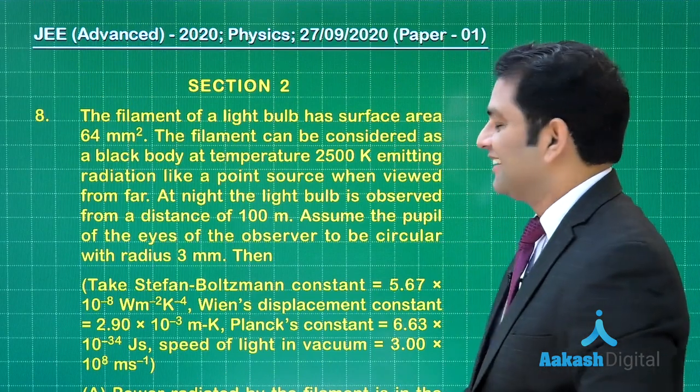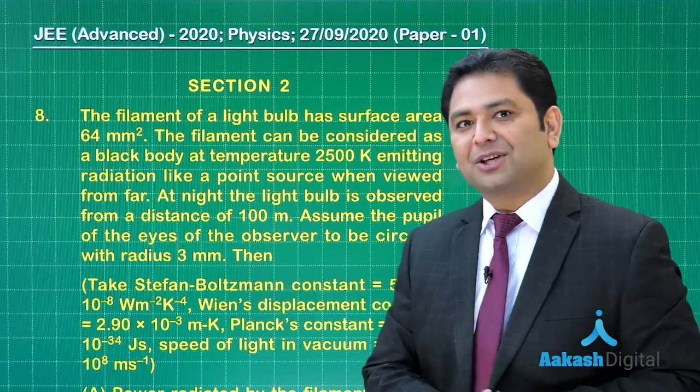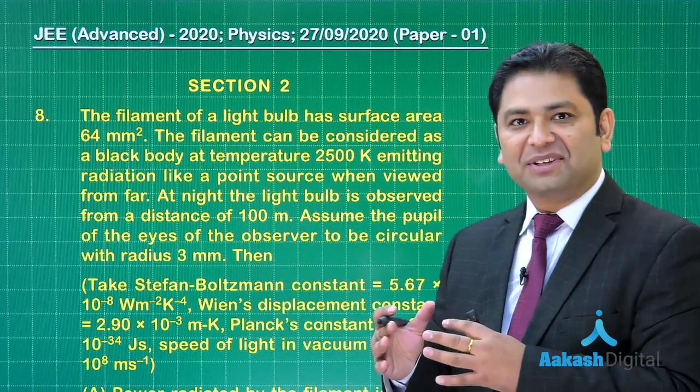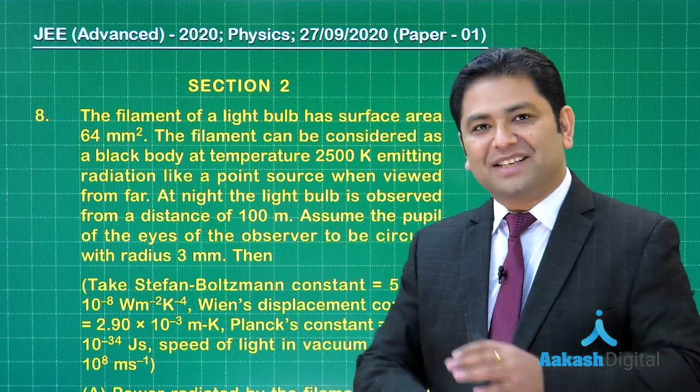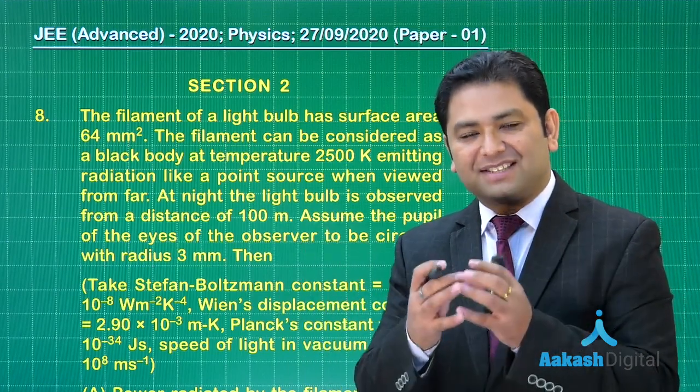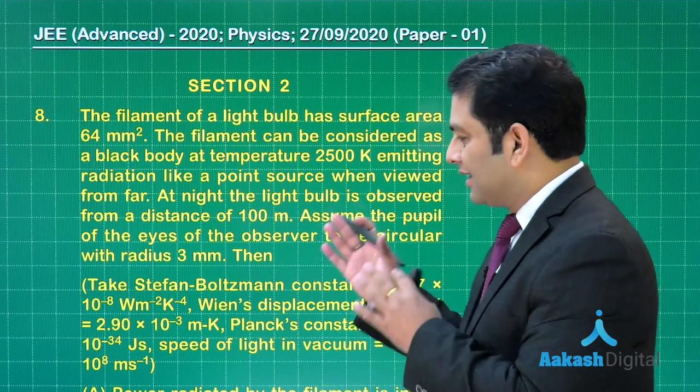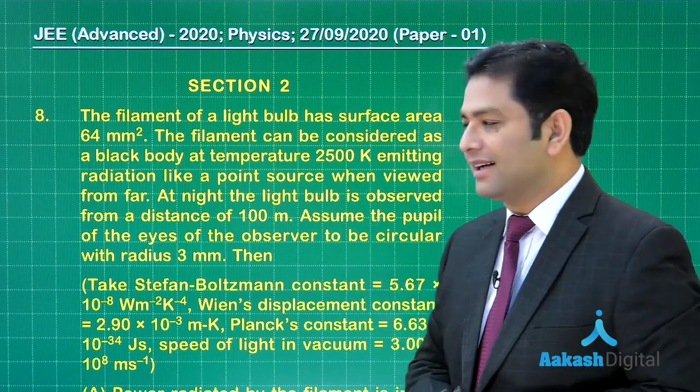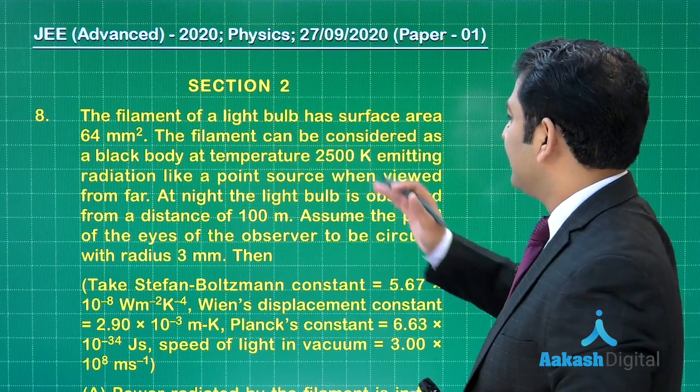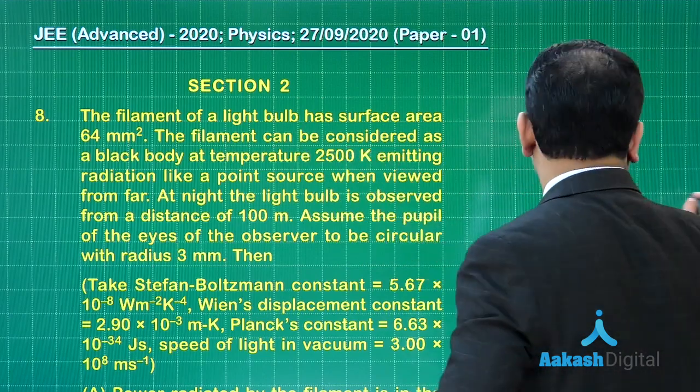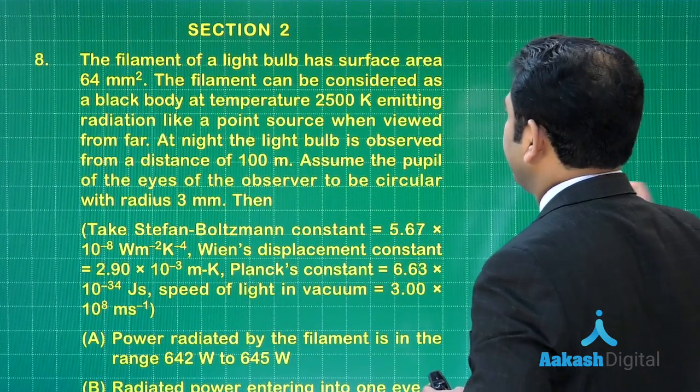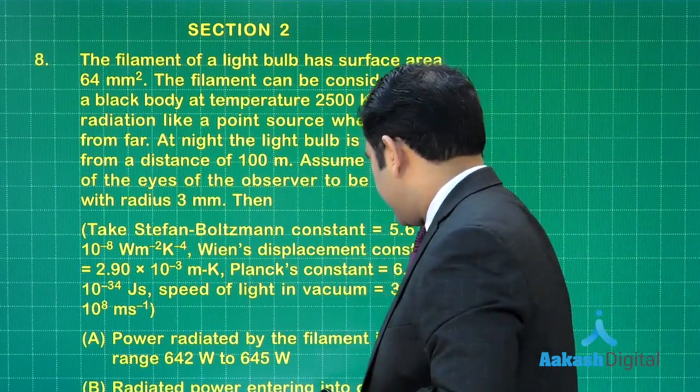Question number 8 is brought from the topic of radiation. If you go through the options that may initially scare you, because every possible concept of radiation has been merged into this question and a little bit of calculation is required. Let us see what it says. There is a filament light bulb having surface area. What I will do is pick up the variables. The surface area is given.